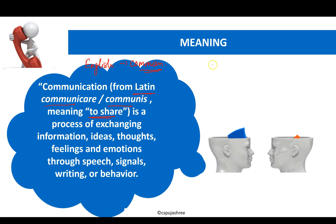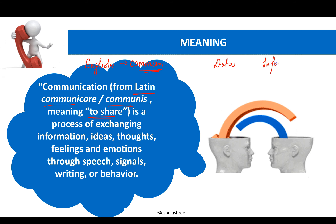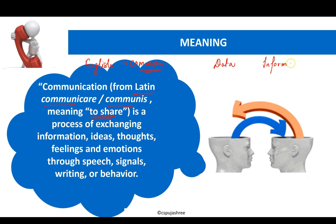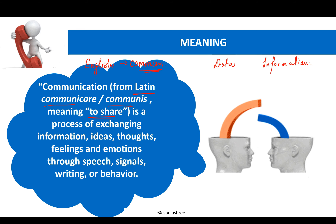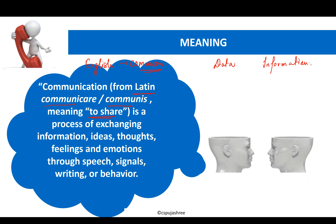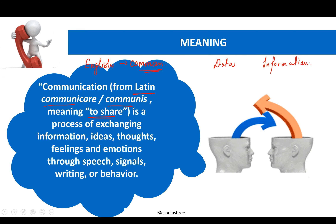You should know the difference between data and information. We always say 'information', not 'data'. Why? Data is in raw form, while information is processed data — filtered, relevant data. When we extract relevant data from a bulk of data, that filtered data is called information.